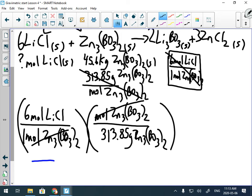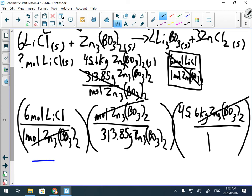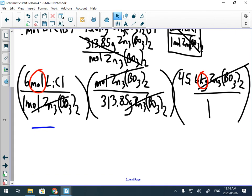Now I've only got mass left. Oh no, it's in kilograms. Don't worry. Let's see what happens. Let's put that on top. 45.6 kilograms zinc borate over one. And the grams cancel and you're left with a kilomole. That's a thing. That's okay. A kilomole exists just like a kilogram or a kilometer. So six times 45.6 divided by 313.85. I wind up with 0.872 kilomole.